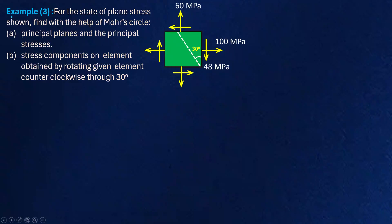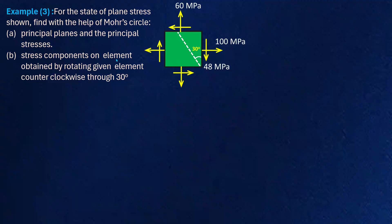Hi friends, let us see another example based on Mohr circle. The state of stresses acting on a plane element is shown, and with the help of Mohr circle we need to find out the principal plane and principal stresses, and second, the stress component on the element obtained by rotating the given element counter-clockwise through 30 degrees.